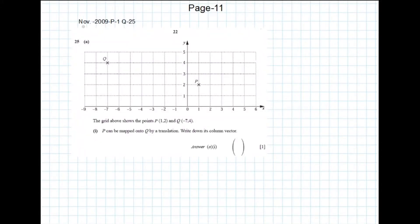This is a question related to translation. It is November 2009 Paper 1, question number 25. The grid shows point P having coordinates (1, 2) and Q has coordinates (-7, 4).